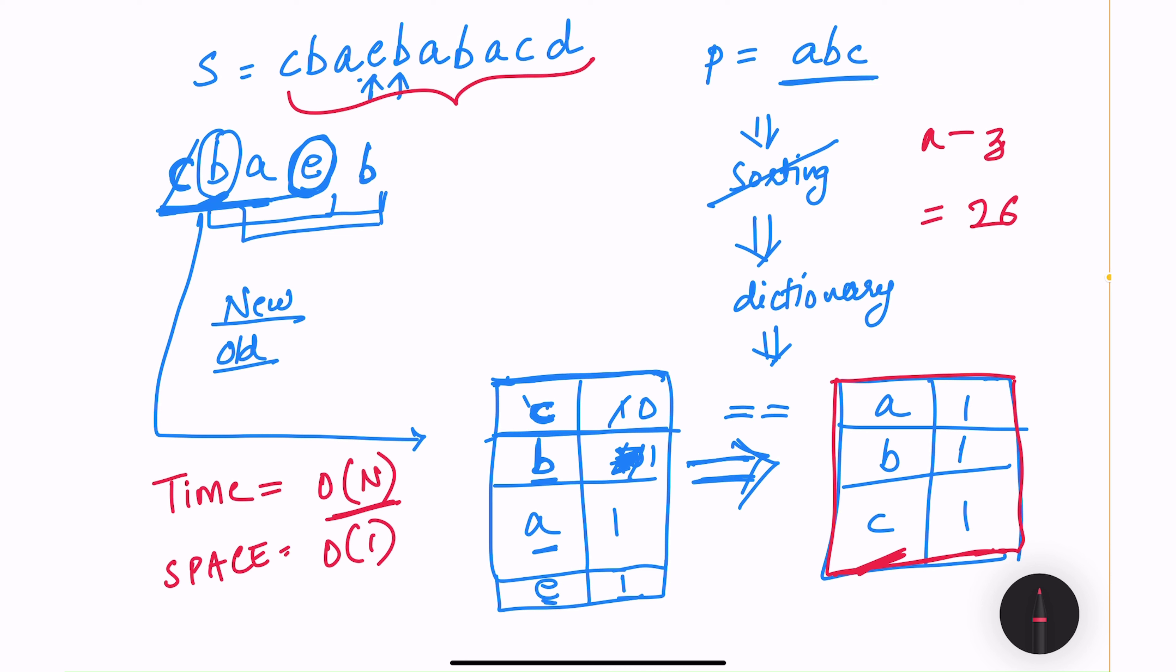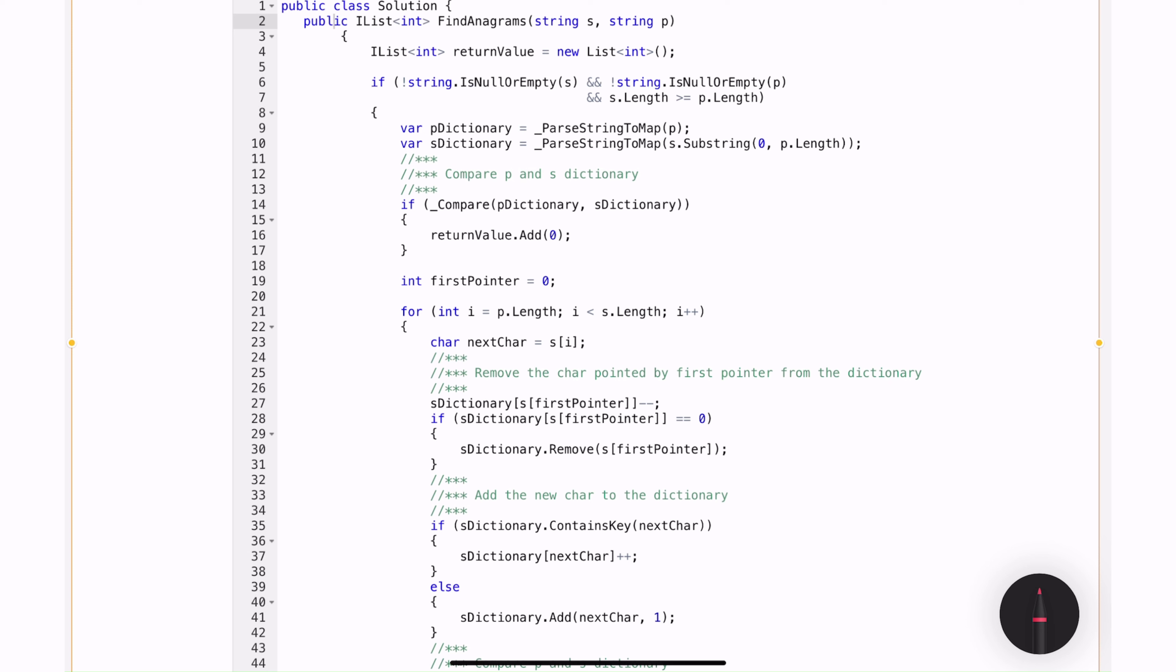Now let me show you how this solution can be implemented using C sharp. So here is my C sharp solution. In the main method, I have initialized this return value variable, which is of type length of int, which will hold all of the indexes from where anagrams are beginning from string S. Then I have a validation to check if the string S is not empty, P is not empty, and the length of S needs to be greater than or equal to P dot length. If the length of S is small, then it won't have enough characters to build an anagram.